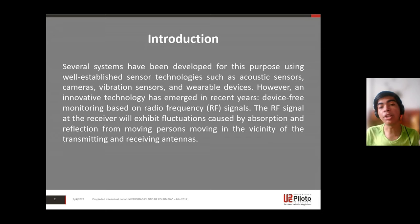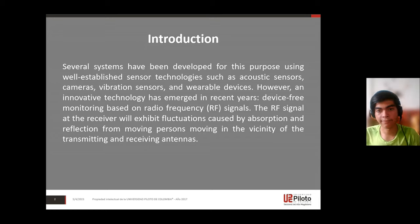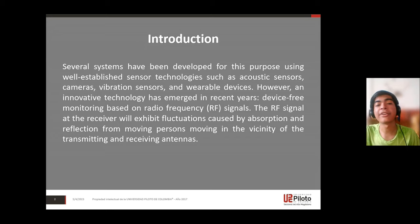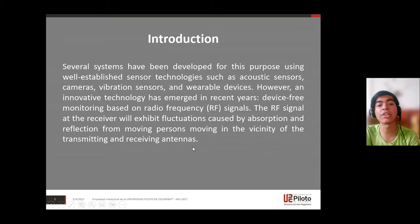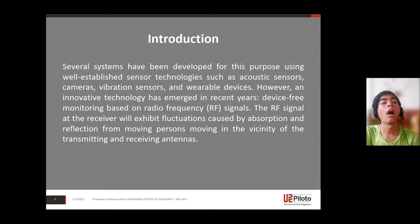Device-free monitoring based on radio frequency (RF) signals. The RF signal at the receiver will exhibit fluctuations caused by absorption and reflection from persons moving in the vicinity of the transmitting and receiving antennas.